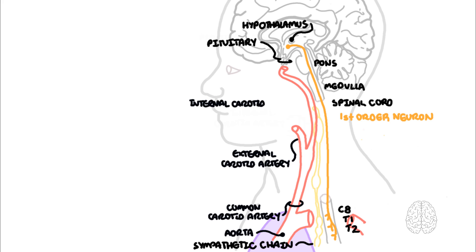The second sympathetic neuron travels from the sympathetic trunk through the brachial plexus, over the lung apex. It then ascends to the superior cervical ganglion located near the angle of the mandible and roughly around the bifurcation of the common carotid artery to the external and internal carotid arteries.